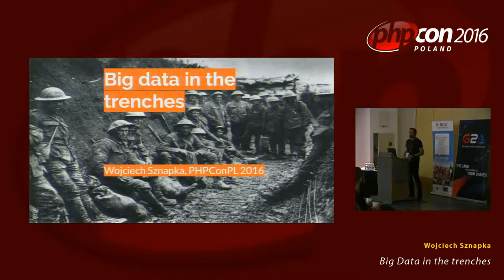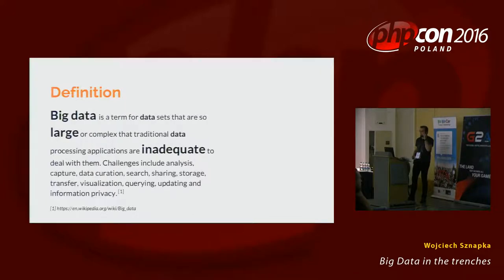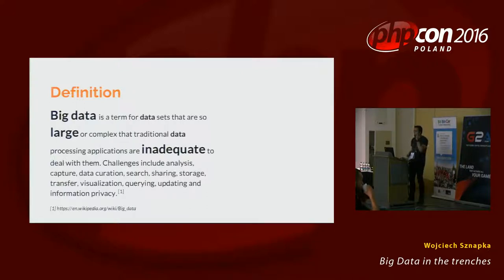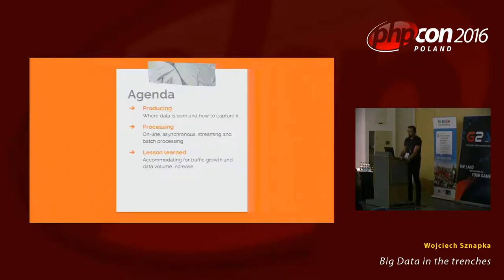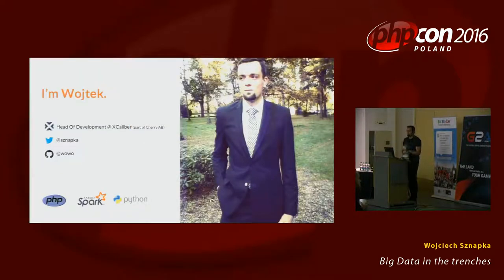Welcome to my big data in trenches talk. We're glad you made it today after yesterday's party. Let's start with a small definition you can find everywhere. Big data is a bit of an abused term nowadays, but Wikipedia says it's sets of data that's too large for the traditional tools to process — basically, they're a bit inadequate.